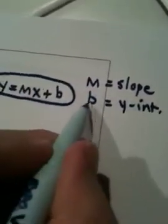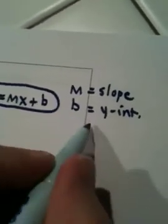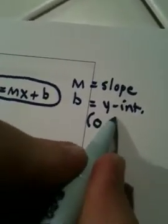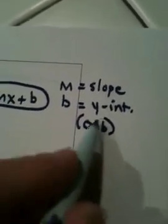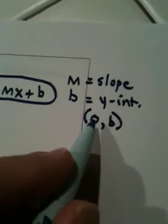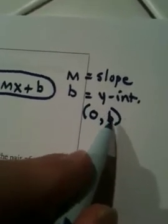And if you wrote the y-intercept as an ordered pair, it would be (0, b). So anytime you see an ordered pair of a line written as (0, something), this number is this b.